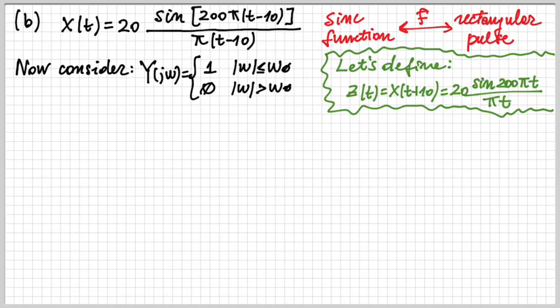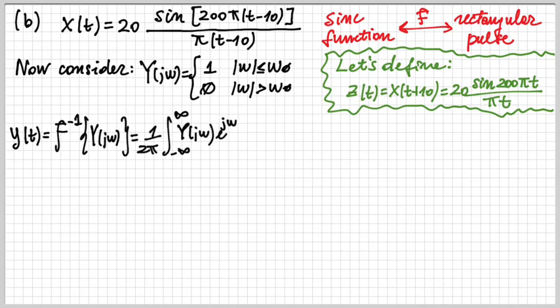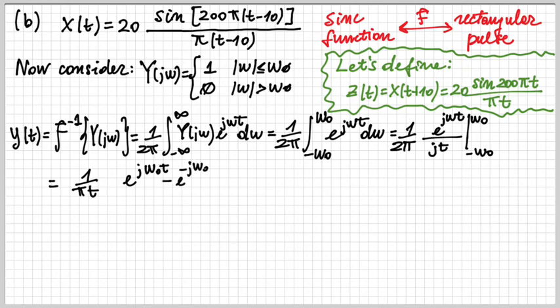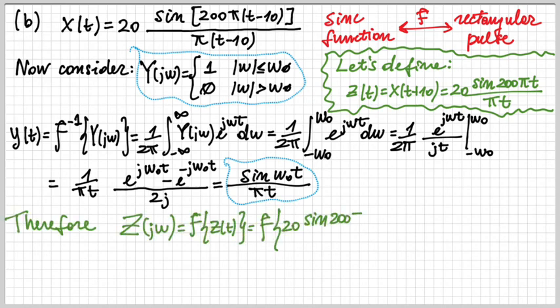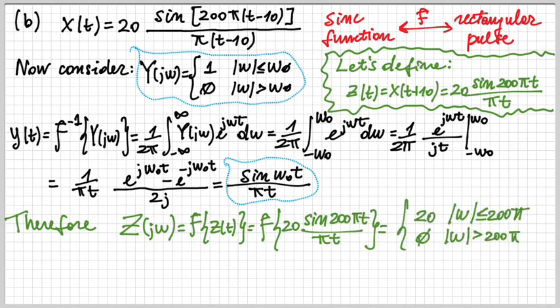Consider a rectangular pulse in the frequency domain Y(jω) equal to 1 when |ω| < ω₀. Solving its inverse Fourier transform gives sin(ω₀t) / (πt). So sin(ω₀t)/(πt) has Fourier transform equal to 1 between -ω₀ and ω₀. For z(t), which is 20 times this with ω₀ = 200π, the Fourier transform Z(jω) is 20 between -200π and 200π, and zero elsewhere.